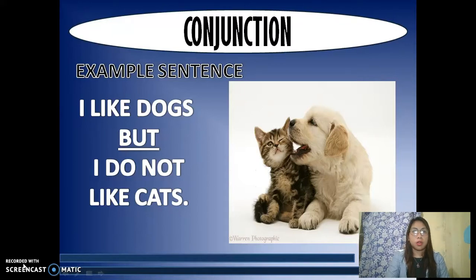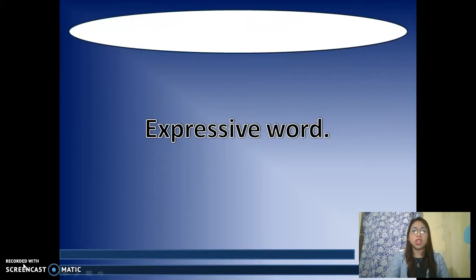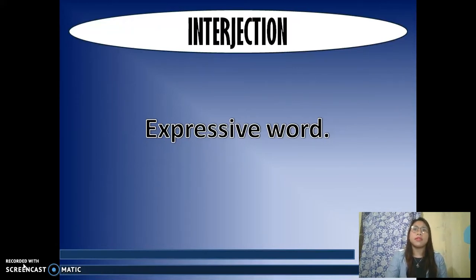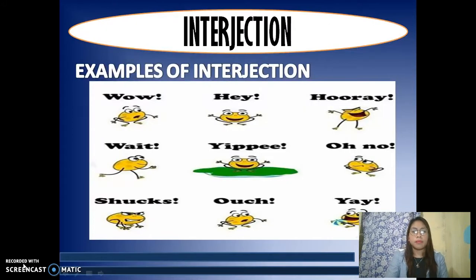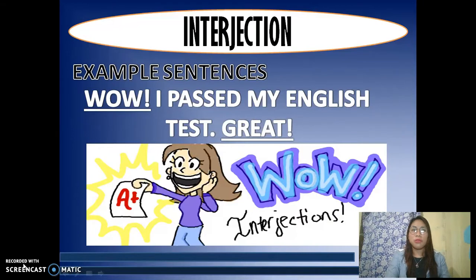The eighth part of speech is interjection, which is very common in everyday use. Interjections are expressive words or phrases that express a strong feeling or emotion — short exclamations like wow, hey, hooray, wait, yippee, oh no, ouch, yay. They express a sudden strong emotion. For example, in the sentence 'Wow, I passed my English test! Great!' — wow and great reveal a strong feeling of excitement.